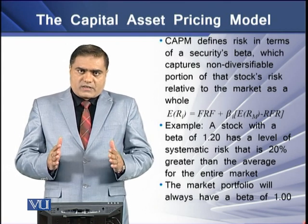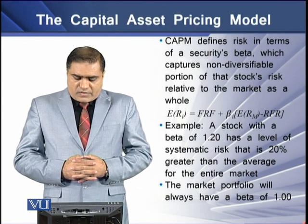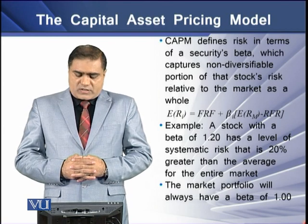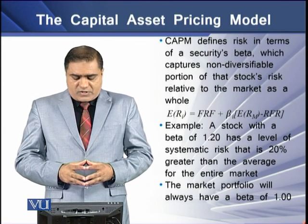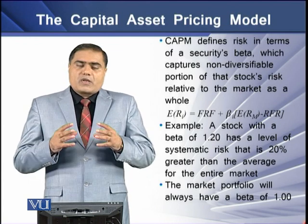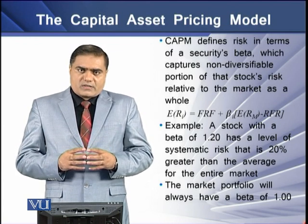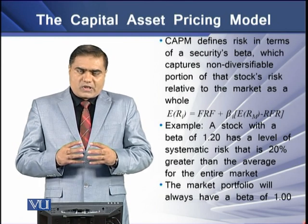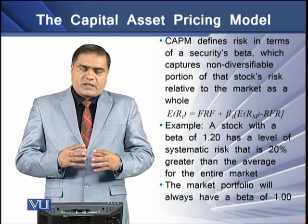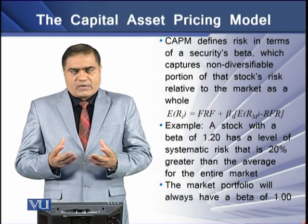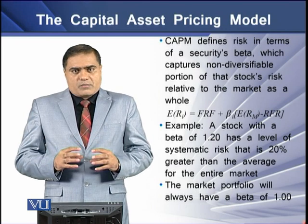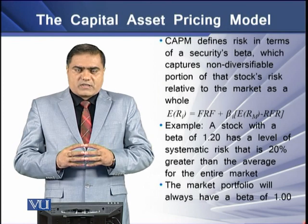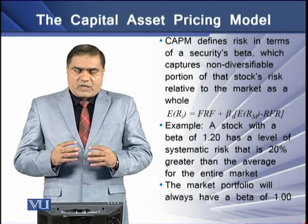As an example, a stock with a beta of 1.2 has a level of systematic risk that is 20% greater than the average for the entire market. A beta of 1.2 means the stock is on average 20% more risky than the market's overall riskiness. An important point to note is that the market portfolio will always have a beta equal to 1.